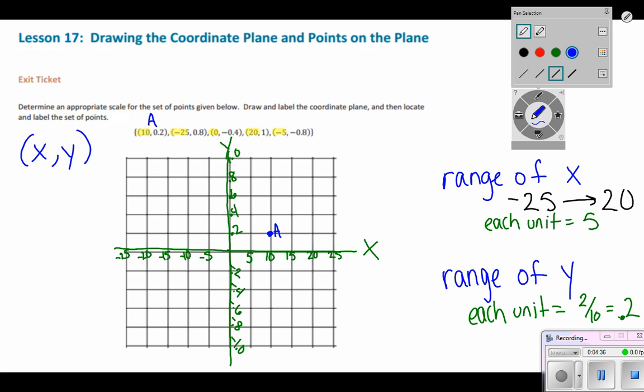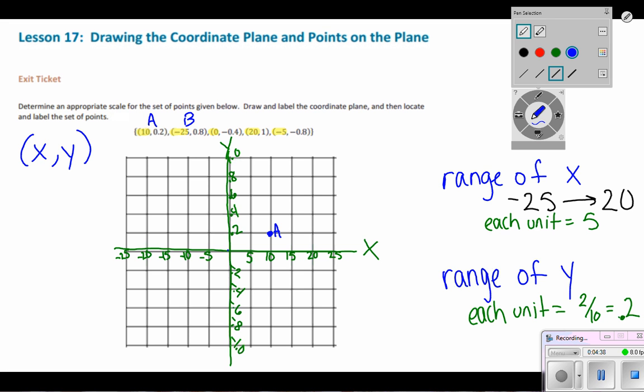My next coordinate, I'm going to call it point B, is negative 25 and positive 8 tenths. So starting at the point of origin, I'm going to move to the left, negative 25, and then up 8 tenths. Right here is my point B.